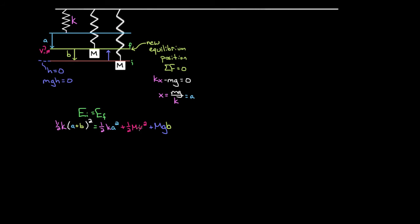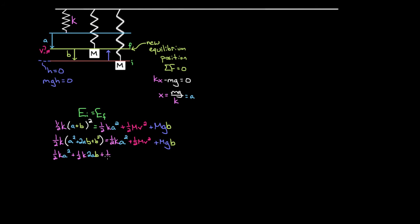To make progress, we expand (A+B)² using FOIL: A squared, plus two times A times B, plus B squared. Distributing the one-half K gives: one-half KA² + KAB + one-half KB². Setting this equal to the right-hand side, we can already see that one-half KA² appears on both sides — subtract it from both sides and it cancels. The one-half and the 2 in the cross term also cancel, leaving KAB + one-half KB² on the left.